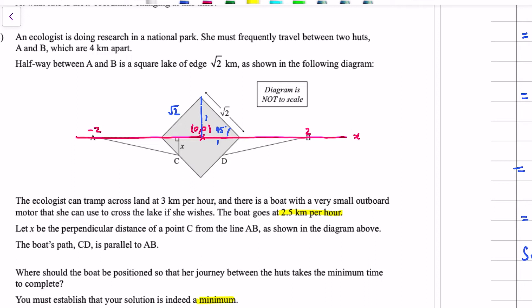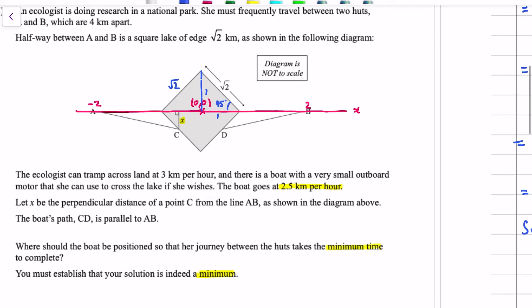Let X be the perpendicular distance of a point C from the line AB. That's in there. That's our independent variable. Where should the boat be positioned so that her journey between the huts takes the minimum time? So we're minimizing time. Time is our dependent variable. X is our independent variable. And then we've got a whole heap of things in the question that don't change. Like the lake doesn't move, its size doesn't change, and the huts don't move. So we need to write T in terms of X and then differentiate to find the stationary point.